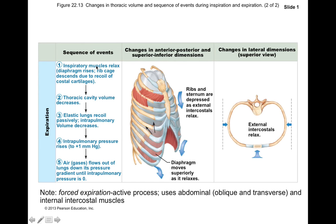The inspiratory muscles relax, causing your rib cage to descend and recoil from your cartilage. Thoracic cavity volume decreases, and intrapulmonary pressure increases — just plus one millimeter of mercury with respect to atmospheric pressure. Air then flows from your lungs, where pressure is higher, out of your airways into the atmosphere, until the pressure gradient is zero.